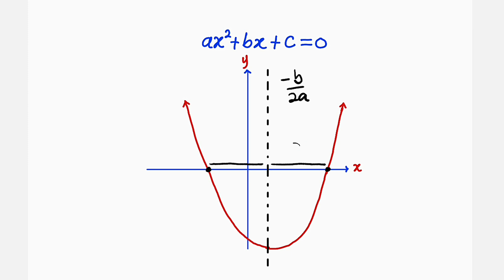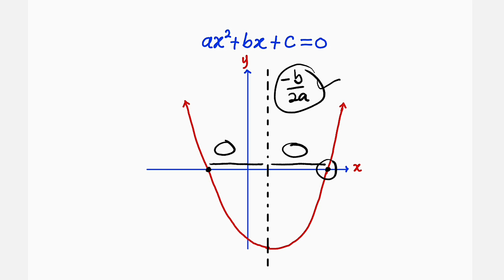Therefore, whatever distance is here — if you add it to the line of symmetry, you're going to obtain the root to the right-hand side. And if you subtract the same value from the line of symmetry, you're going to obtain the other root to the left-hand side.